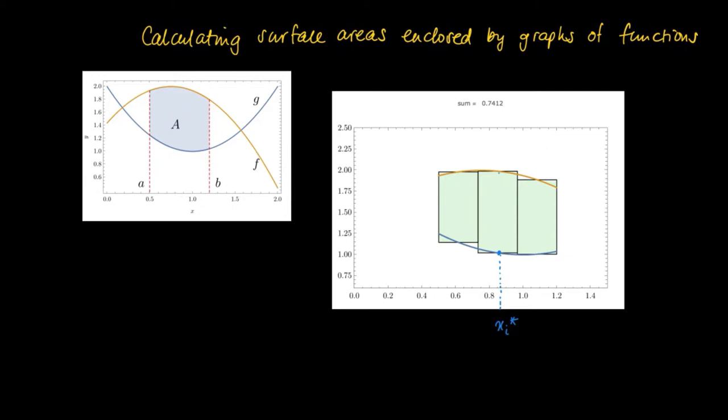And we may subdivide the interval, a half, 1.2 over here, a equals a half and b equals 1.2. And we may form so-called Riemann sums again.